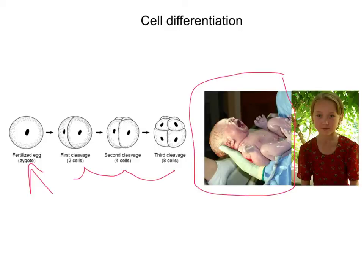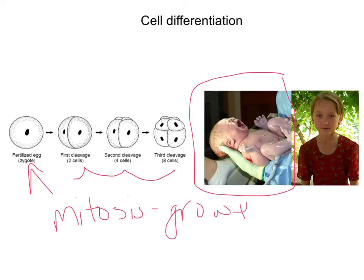When we're born, we have lots and lots of cells, and those cells are genetically identical. However, they have also specialized. We started with our zygote, our one cell, and it went through lots and lots of mitosis to give us growth, because mitosis gives us genetically identical cells.